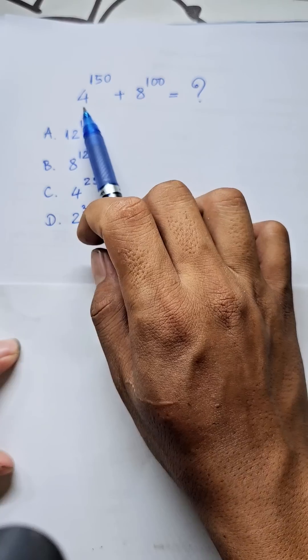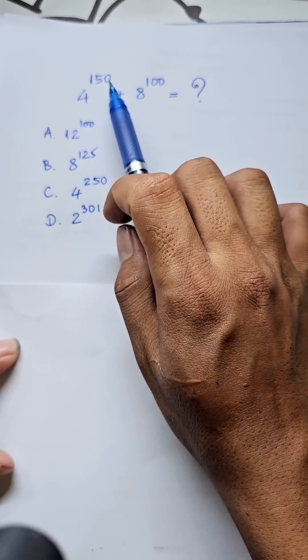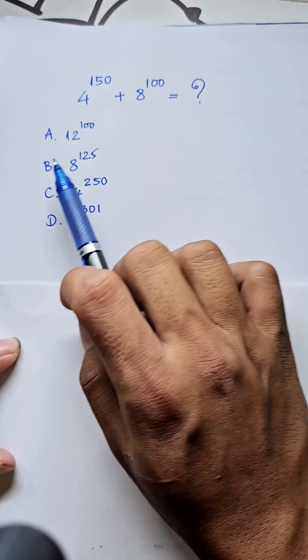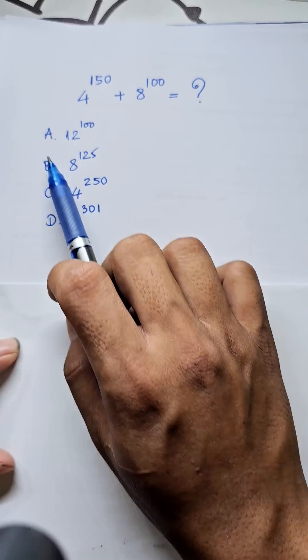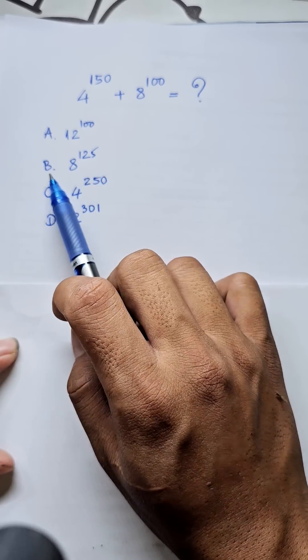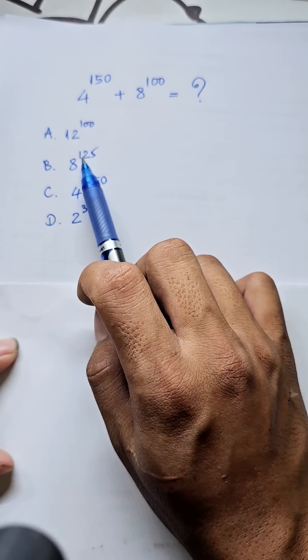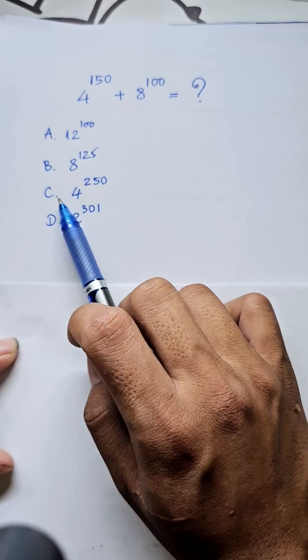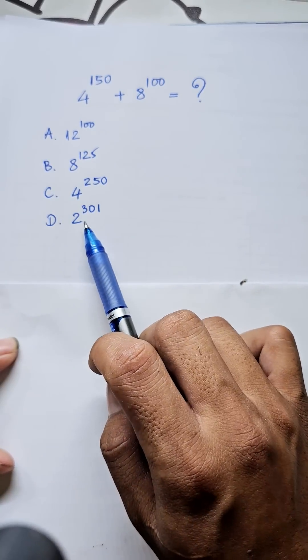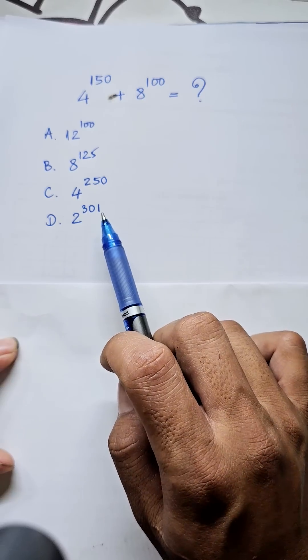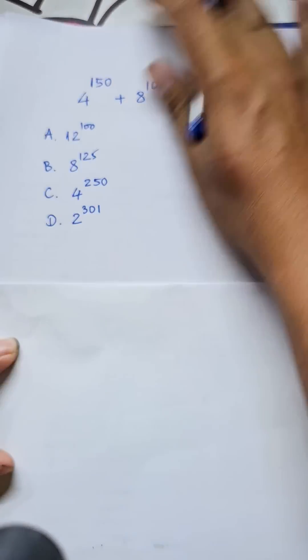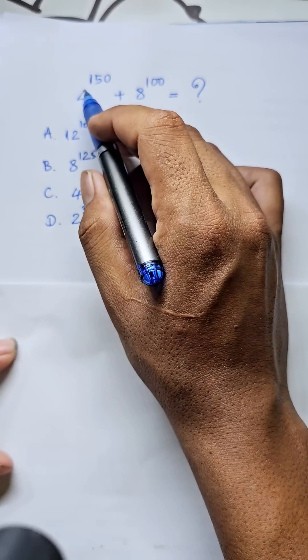Find the value of 4^150 plus 8^100. The options are: A. 12^100, B. 8^125, C. 4^250, and D. 2^301. Now look at our exercise: 4^150